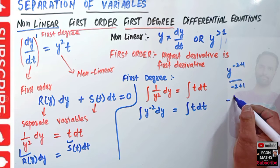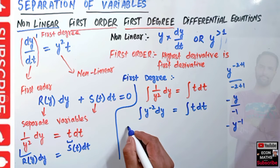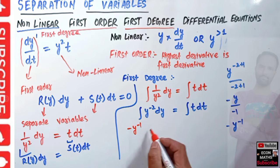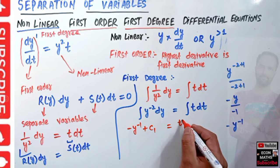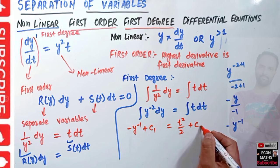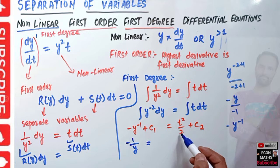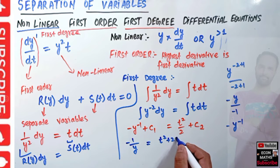This gives us y raised to the power minus one divided by minus one, leaving us with −y⁻¹. So integrating both sides we get: −y⁻¹ + c₁ = t²/2 + c₂. Rearranging, this becomes −1/y = (t² + 2c₂ − 2c₁) / 2.